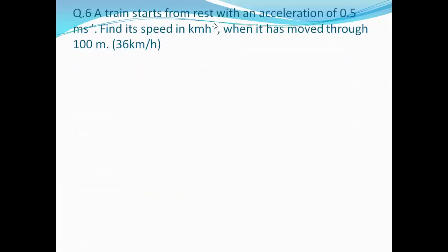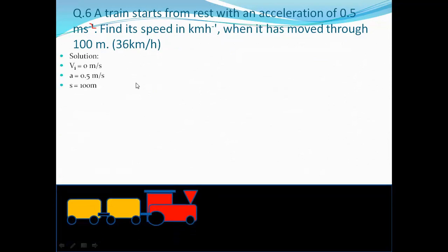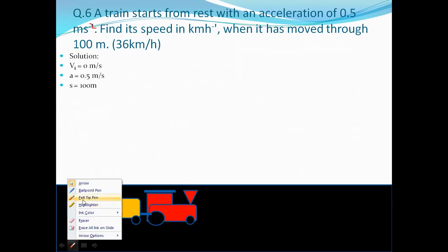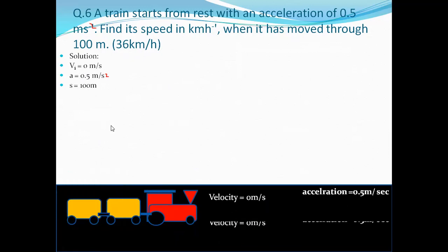Moving on to question 6: a train starts from rest with an acceleration of 0.5 m/s². Find its speed in km/h when it has moved 100 meters. The expected answer is 36 km/h. Since it starts from rest, VI = 0. Acceleration = 0.5 m/s² and displacement = 100 meters.